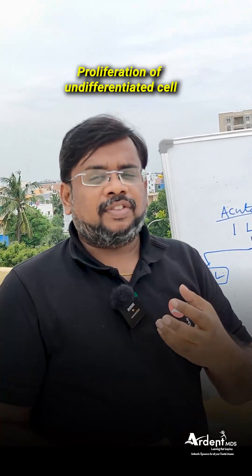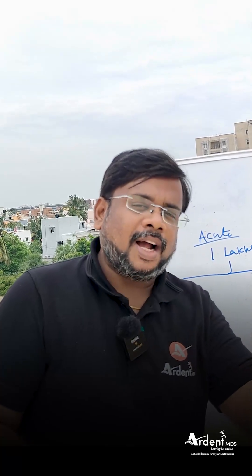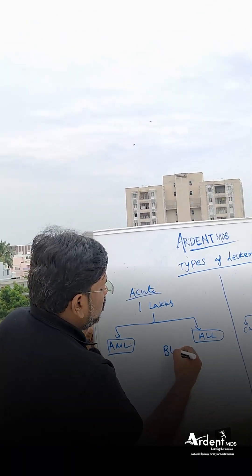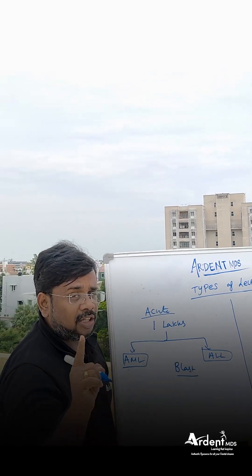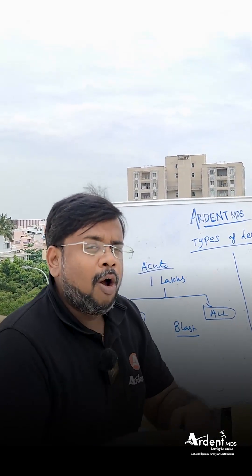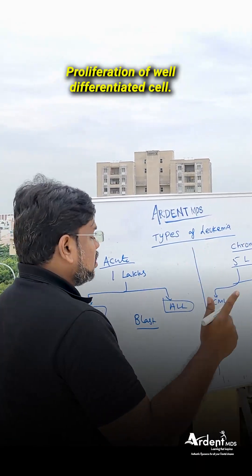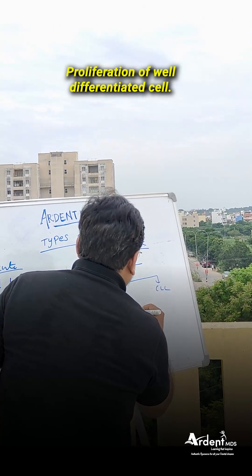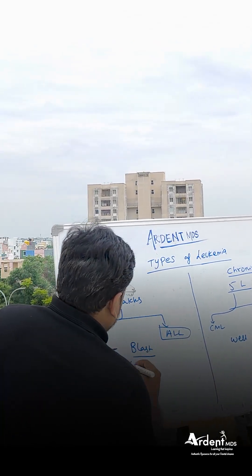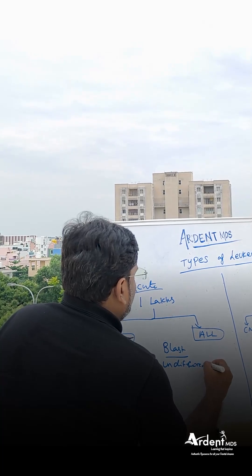What is the meaning of undifferentiated? Undifferentiated means blast cells — immature cells that proliferate. That is called acute leukemia. To repeat: undifferentiated blast cell proliferation is acute. But in chronic leukemia, you have more proliferation of well-differentiated cells. Here it is well differentiated, and in acute it is blast cells — that is undifferentiated.